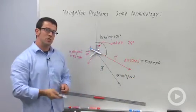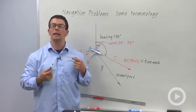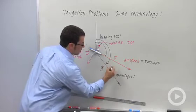But it's also important to know what direction the plane is actually traveling with respect to the ground, because that's where the plane is going. That's going to be this angle, and that's called the course.